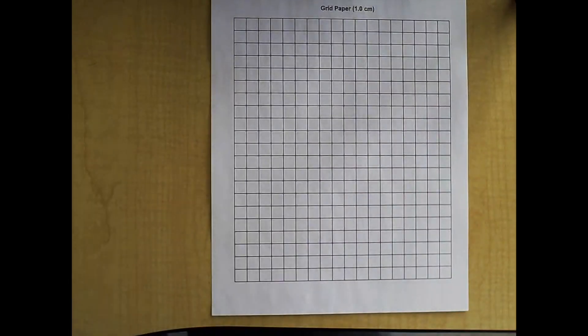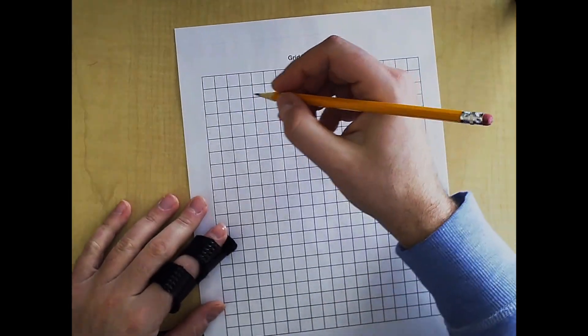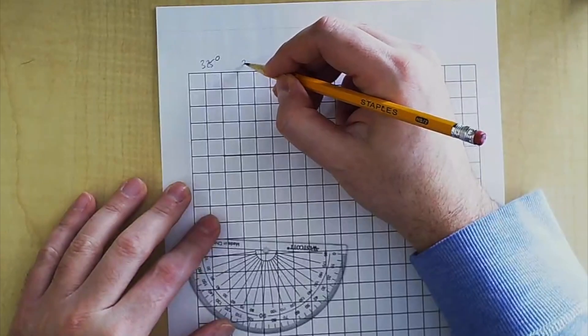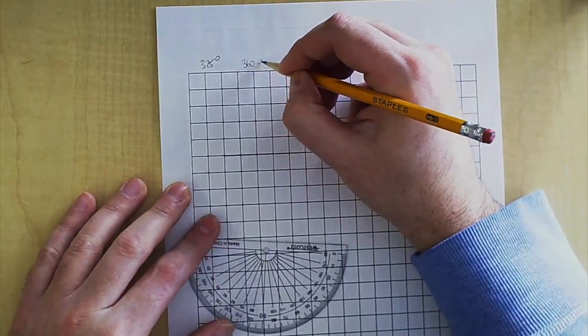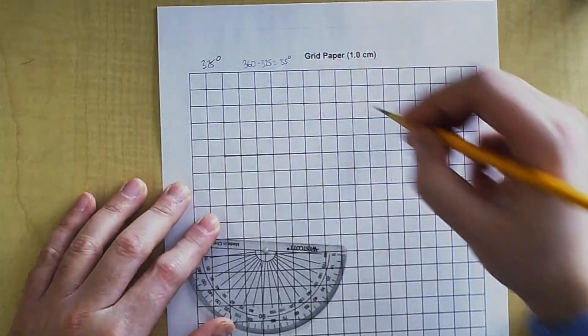I'm going to go step by step to tell you how to do this in an easier way. The first one is 325 degrees. You need to take 360 minus 325, that gives you 35 degrees.